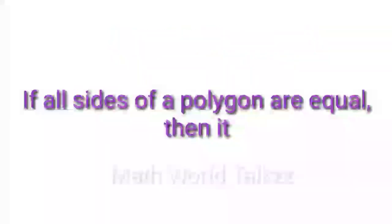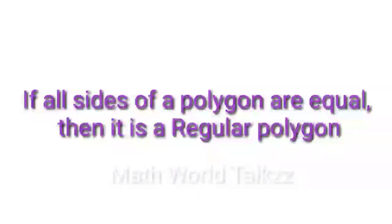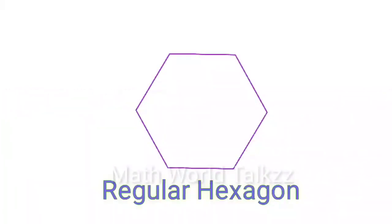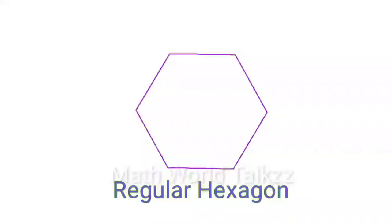So what is a regular polygon? If all sides of a polygon are equal, then it is called a regular polygon. If all sides in a hexagon are equal, then it is called a regular hexagon. We commonly call these regular polygons.